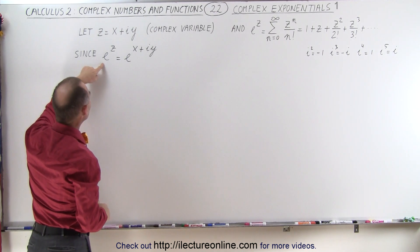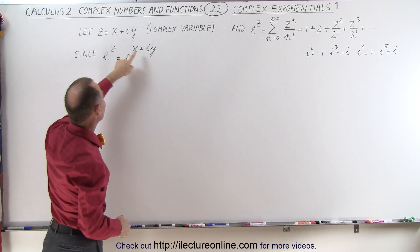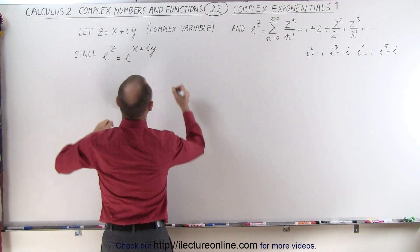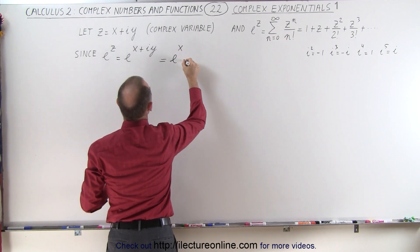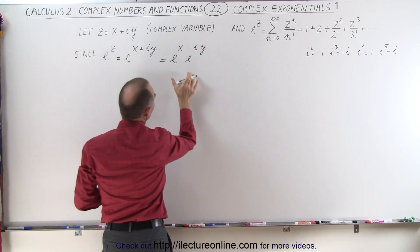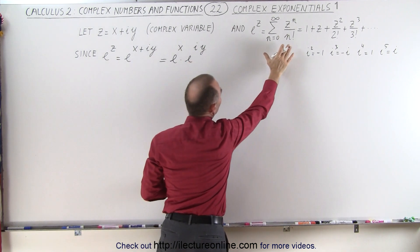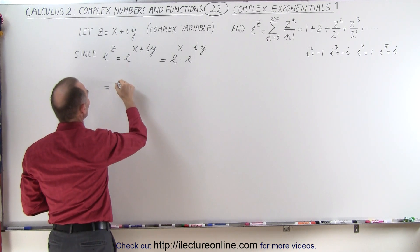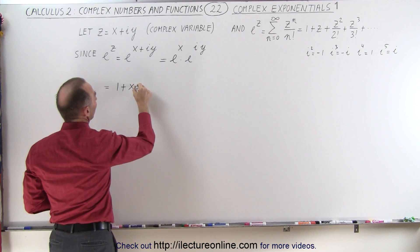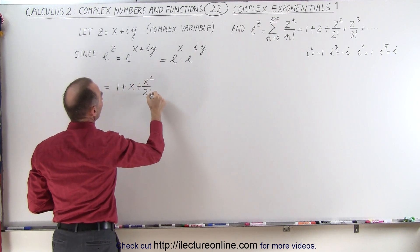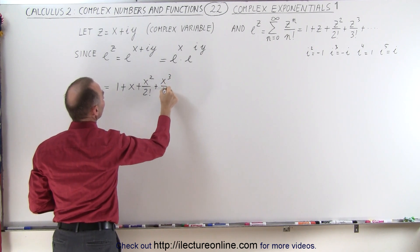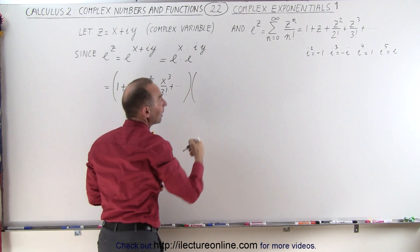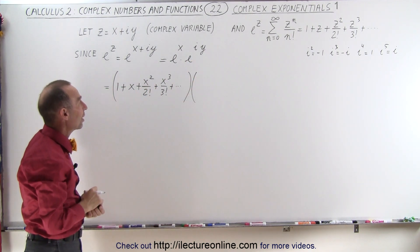Now if we let e to the z equal e to the x plus iy, since z equals this, we can write this as e to the x times e to the iy. We're going to expand each one of these separately. e to the x can be written as 1 plus x plus x squared over 2 factorial, plus x cubed over 3 factorial, and so forth, multiplied by e to the iy.